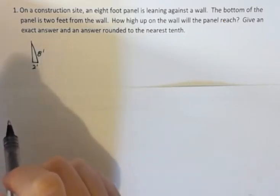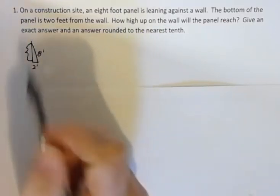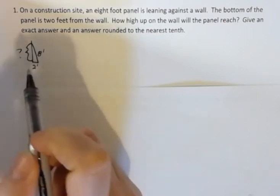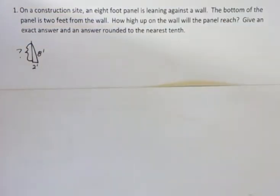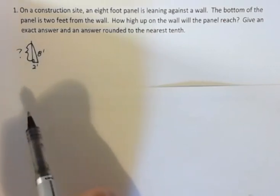So the question is how far up on the wall is the panel resting? And of course you should know before we start it's got to be less than eight feet, right, because this is a right triangle and the longest part of that should be the diagonal.